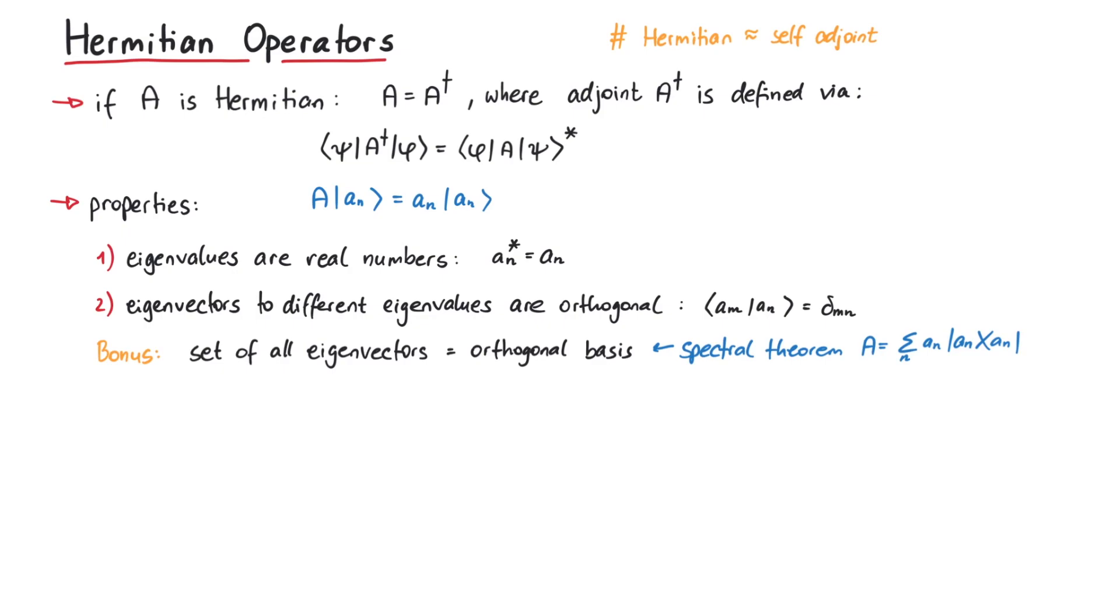We start with the definition of the adjoined operator, but since A dagger is the same as A, we can also write this as ⟨ψ|A|φ⟩. We now replace the arbitrary vectors ψ and φ with eigenvectors of A, such that we have ⟨an|A|am⟩* = ⟨am|A|an⟩.